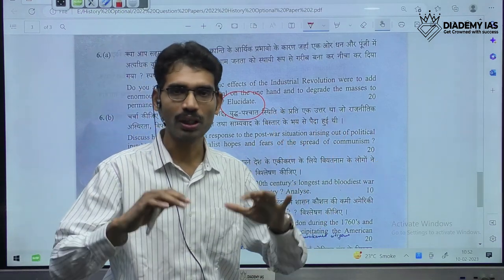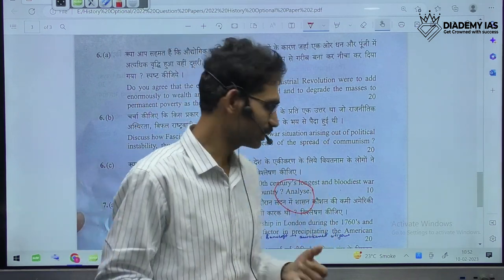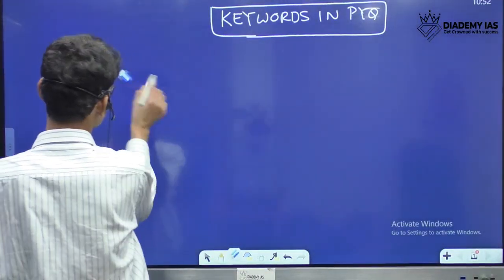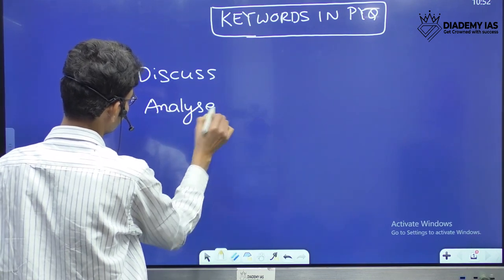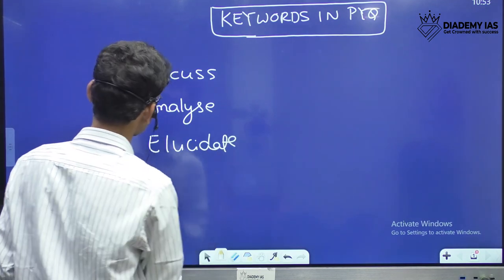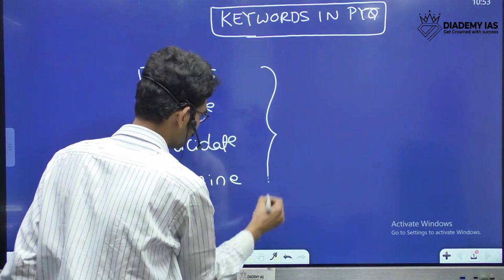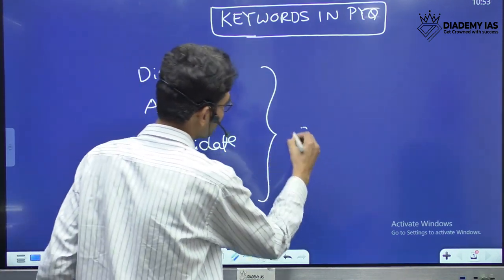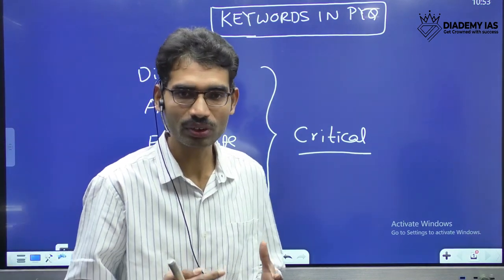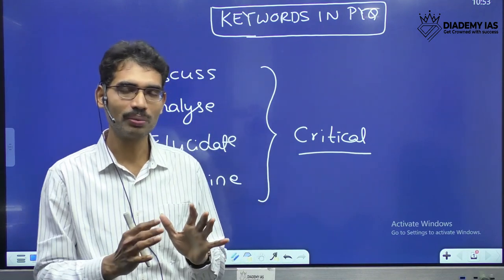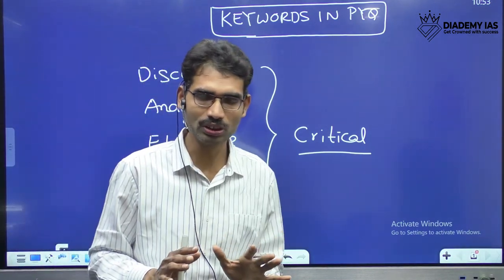Here I am showing what type of keywords come in the examination. You have seen in this question paper itself certain keywords like discuss, analyze, elucidate, and examine. UPSC can add the term 'critically' to any of these — critically examine, critically analyze, critically discuss — that is the only complicated issue with respect to the mains answer. Otherwise, most of these are more or less synonyms to each other, nothing to worry much.